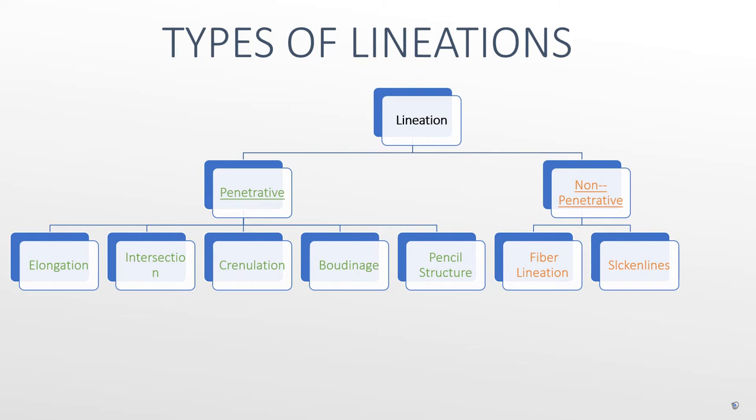There are two types of lineations: penetrative and non-penetrative. Penetrative lineations are almost exclusively found in plastic deformation and they are present everywhere in the rocks, while non-penetrative lineations are found in brittle deformations and they only appear on specific surfaces, like fault zones.